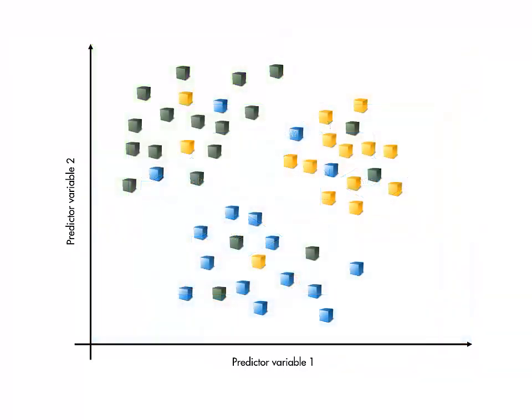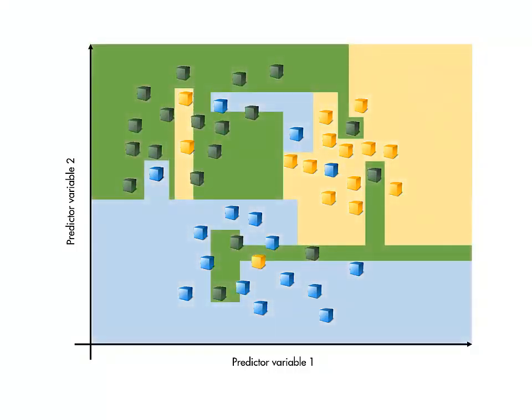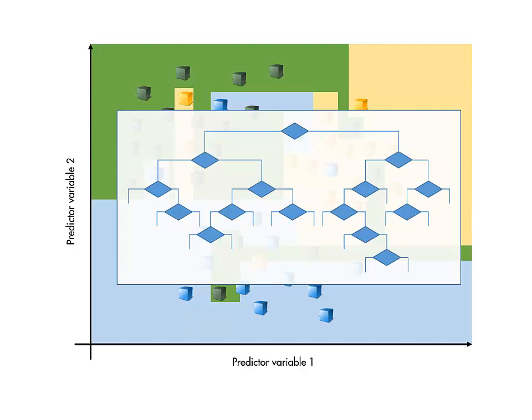As always, realistic data will have noise. Theoretically, a sufficiently complex tree could fit an arbitrarily complex boundary between points. However, this generally means that the model is overfitting the data.